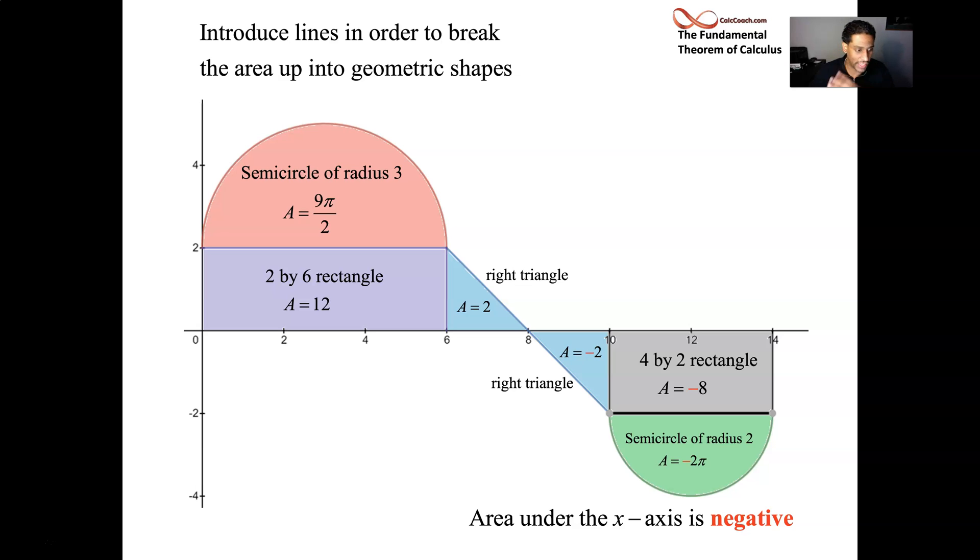There will be four questions that we're going to answer. First up, evaluate g of 14. Remember what g of x is. g of x is the integral from 0 to x. So they're saying plug in x equals 14. Find the integral from 0 to 14. Find the area under the curve from 0 to 14. That's the entire area here. We take the red semicircle, the purple rectangle, the two blue triangles, the gray rectangle, and the green semicircle. We add them all up. That's the total area that's here. The negatives are going to take away from the positives. But we're going to end up with 4 plus 5 pi over 2. That's the total area from 0 to 14.